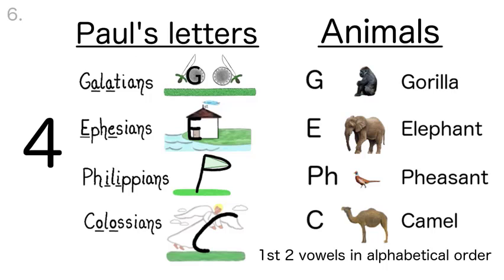And it goes together like this. For animals: Gorilla, Elephant, Pheasant, Camel — Galatians, Ephesians, Philippians, Colossians. Now let's say that three times. For animals, Gorilla, Elephant, Pheasant, Camel, Galatians, Ephesians, Philippians, Colossians. For animals, Gorilla, Elephant, Pheasant, Camel, Galatians, Ephesians, Philippians, Colossians.